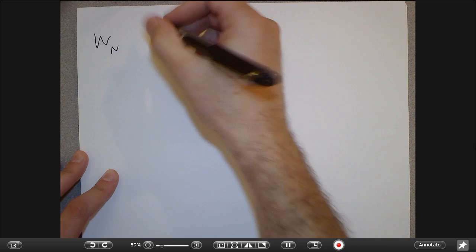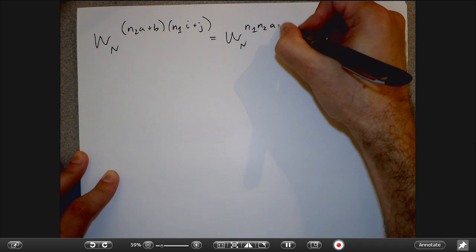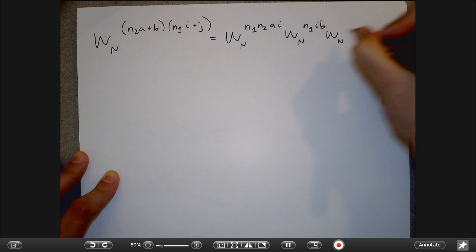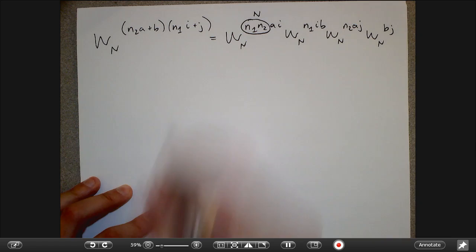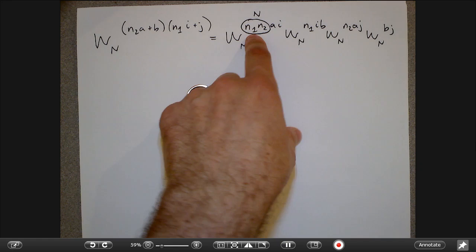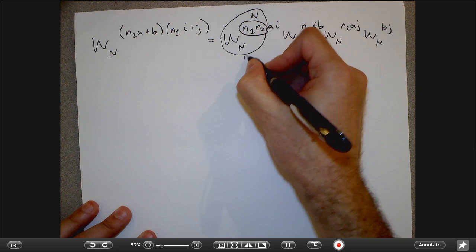Let me expand the exponent. I have W_N to the power (N2·a + b)(N1·i + j), which expands to four terms: N1·N2·a·i, N1·i·b, N2·a·j, and b·j. The first thing to notice is that N1·N2 = N, so W_N raised to N equals 1 — that entire term drops to 1 and can be ignored.